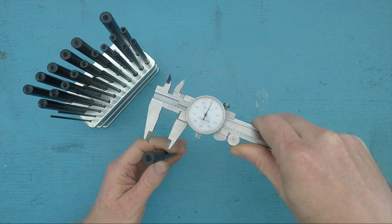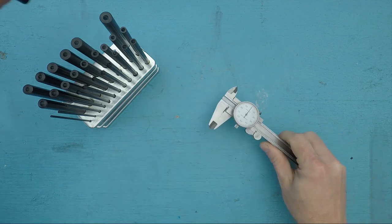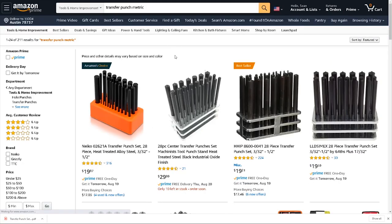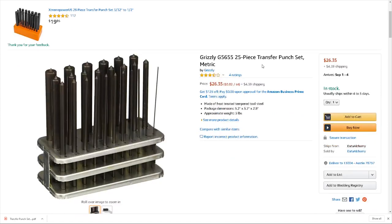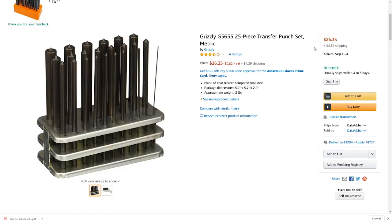If you do a lot of really fussy work, you're going to want a set of metric punches as well, and for some reason those are a lot less common on Amazon, though I did eventually find a comparable model distributed in the U.S. by Grizzly, which you'll also find linked down below.